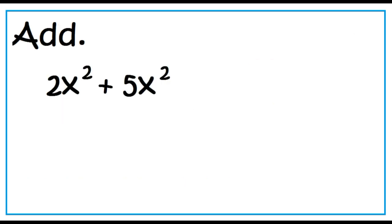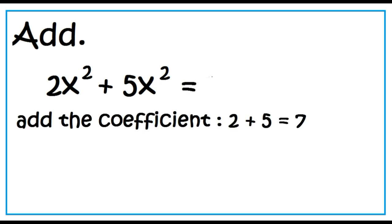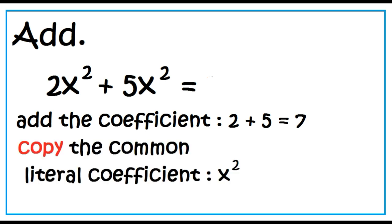Can we combine 2x squared and 5x squared? Yes, because they have the same literal coefficient, which is x squared. To add 2x squared and 5x squared, add the coefficients: 2 plus 5 equals 7, then copy the common literal coefficient. So, 2x squared plus 5x squared equals 7x squared.